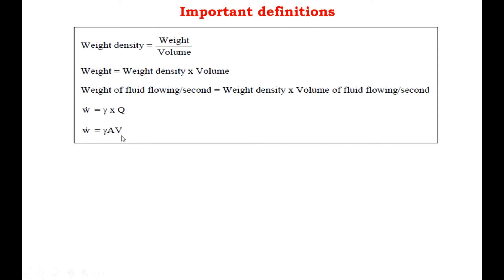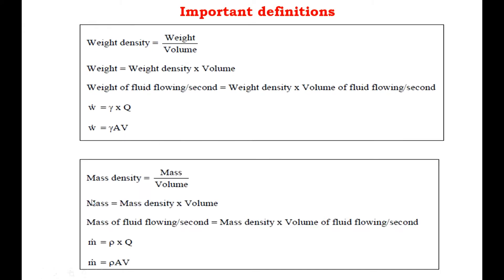The second definition is mass density. Mass density is equal to mass per unit volume. If you further simplify this, you get mass is equal to mass density into volume. In a similar way, if you divide it by time, you get the mass of fluid flowing per second is equal to rho into area into velocity.